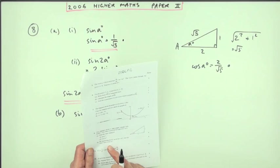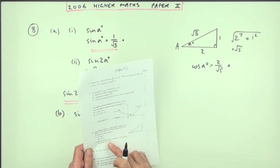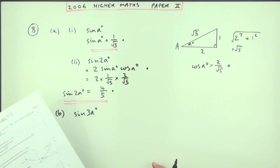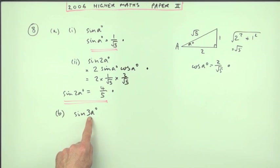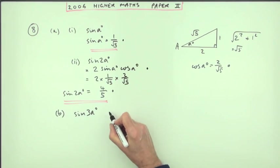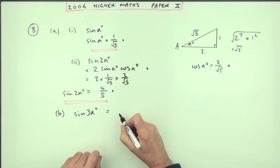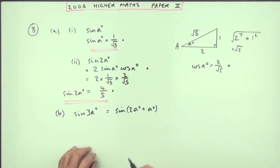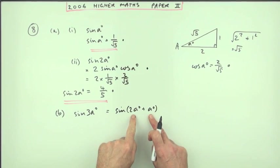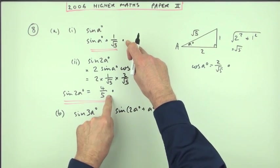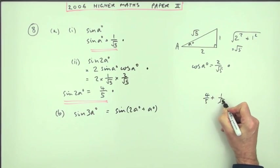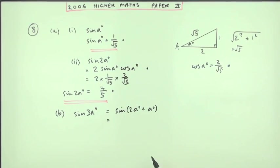Now for the next four marks it says essentially find the value of sine three A and then not trusting that you'll successfully realise you'll have to split it up to do that because you're certainly not just going to say it'll be three times that answer. It even tells you what could you do with three A. Split it up into a two A plus an A. But don't be daft and just add up that answer onto that answer and try and do four fifths plus one over root five. No.